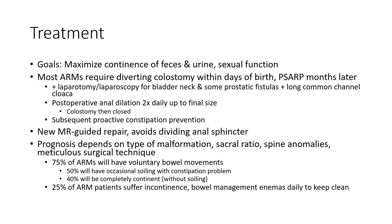Treatment goals are to maximize continence and preserve sexual function. Most anorectal malformations require diverting colostomy within the first day of birth, PSARP a few months later, plus laparotomy or laparoscopy for bladder neck and some prostatic fistulas, plus long common channel cloaca repair. Postoperative anal dilation twice daily up to final size is performed, then colostomy is closed. Subsequent postoperative constipation prevention is important.